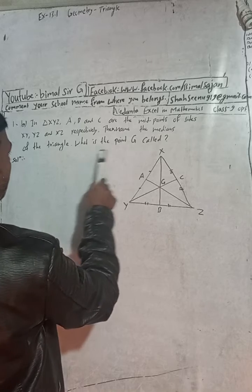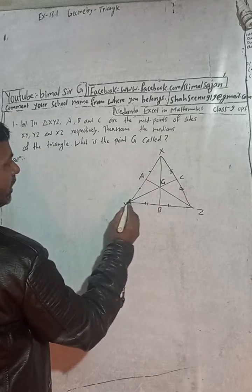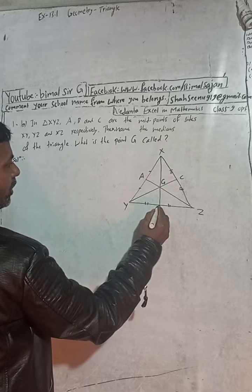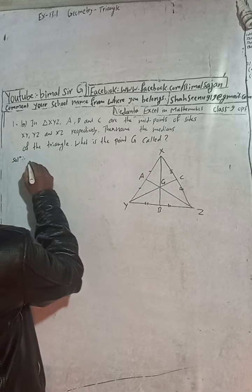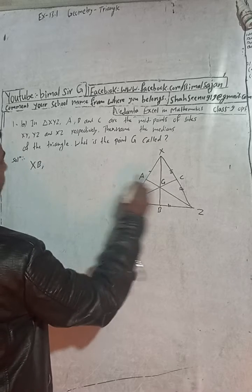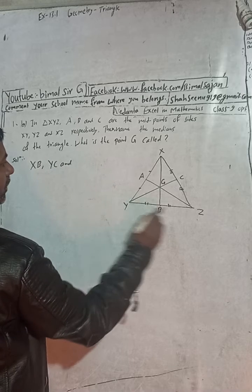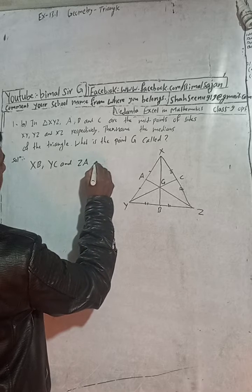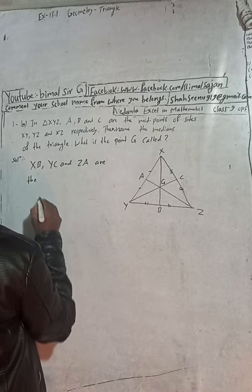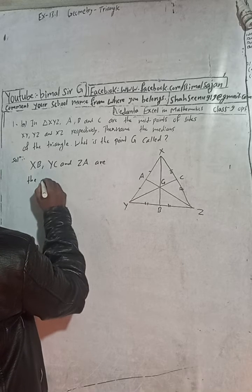Name the medians and submit the triangle. What is the point Z called? The medians of this triangle are: from each vertex to the midpoint of the opposite side — that is XB, YC, and ZA are the medians of the triangle.